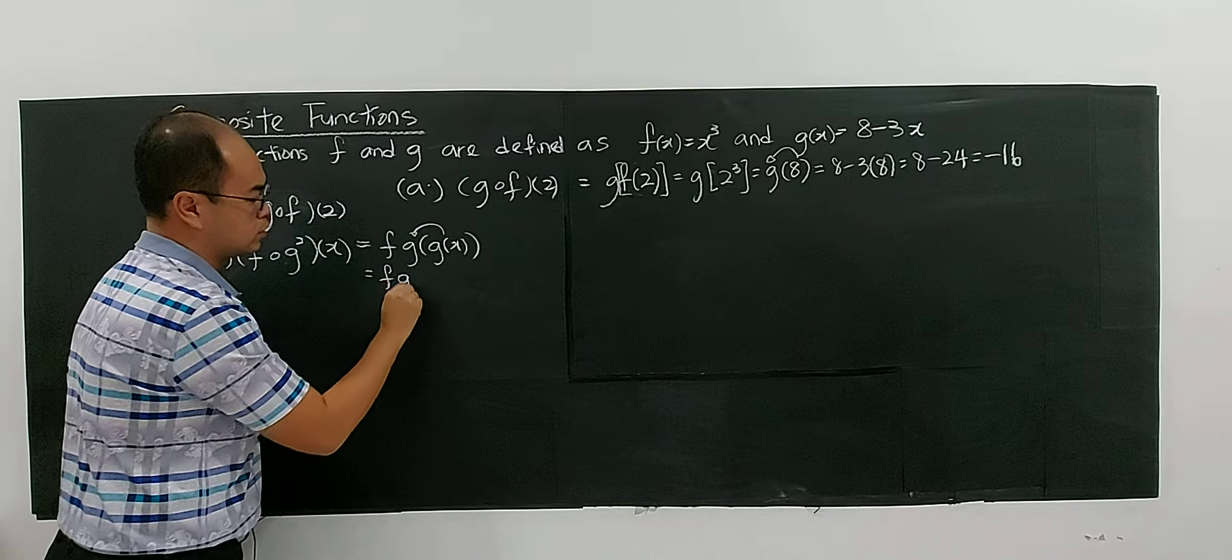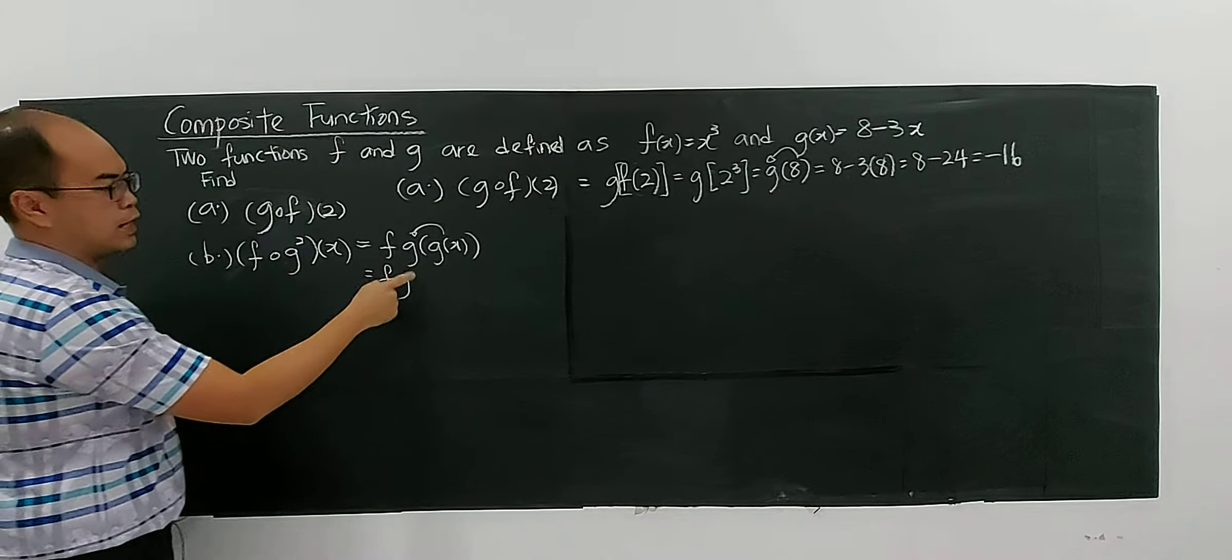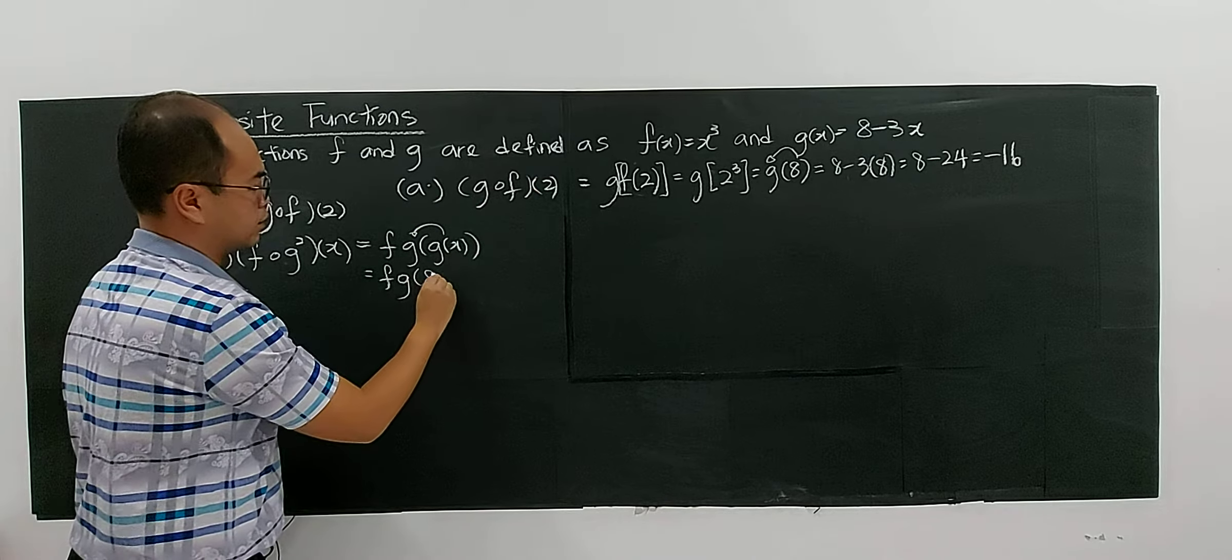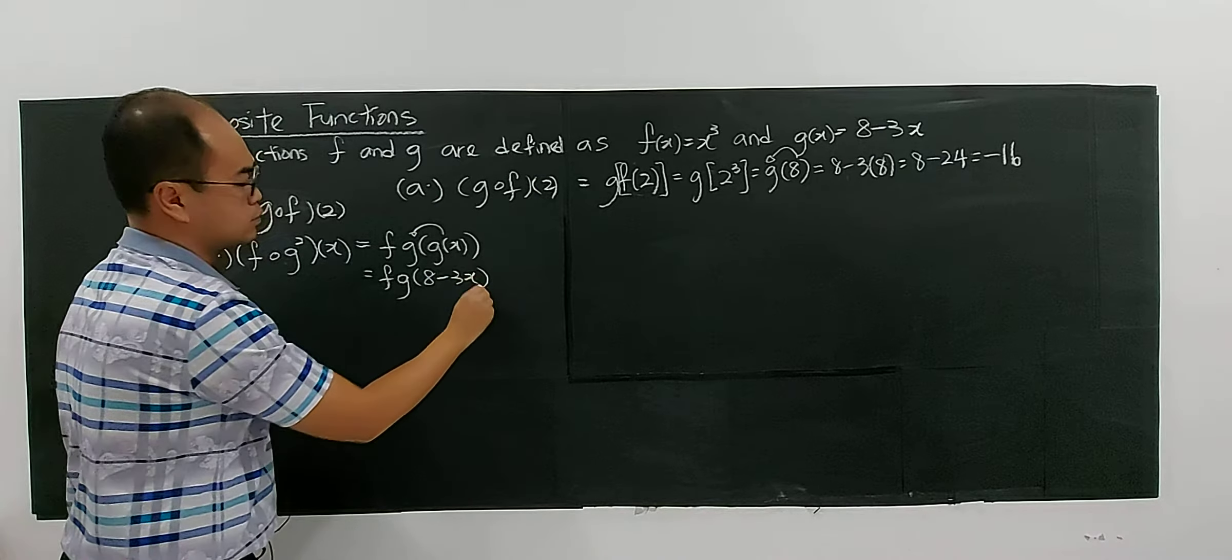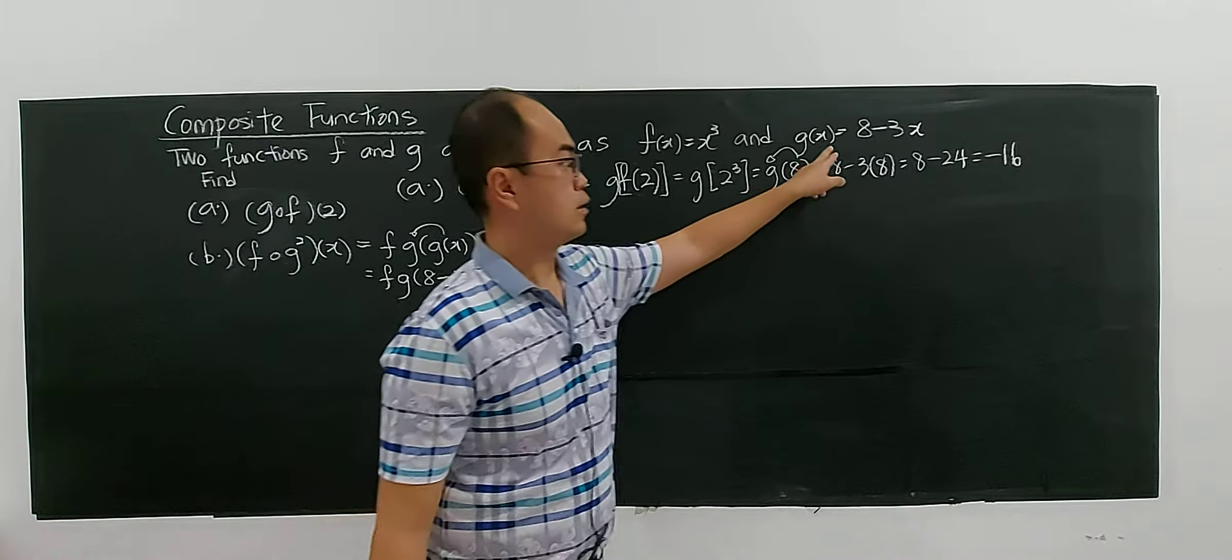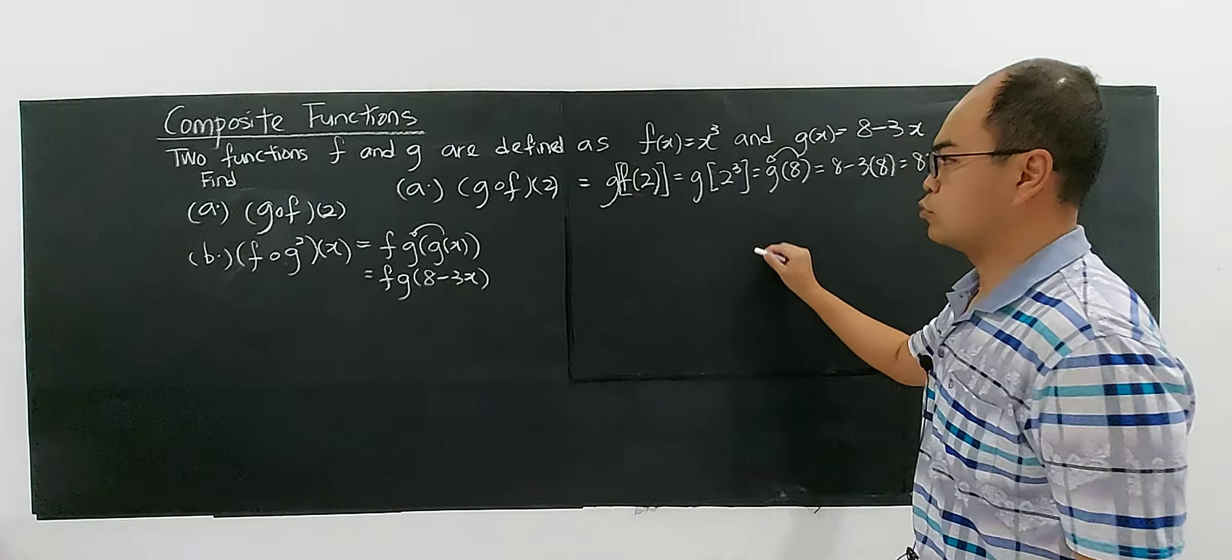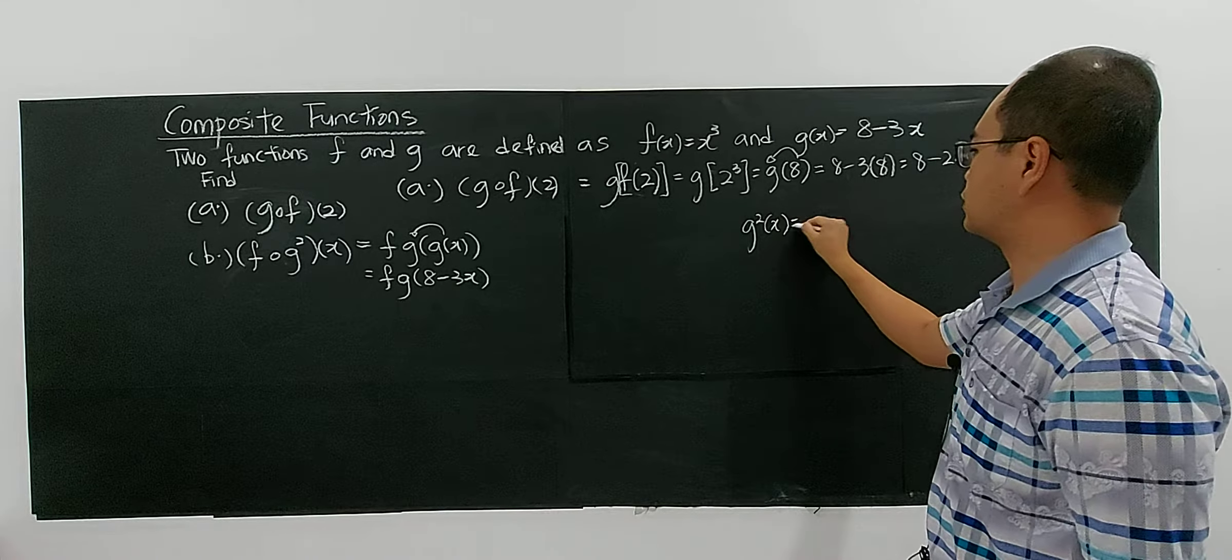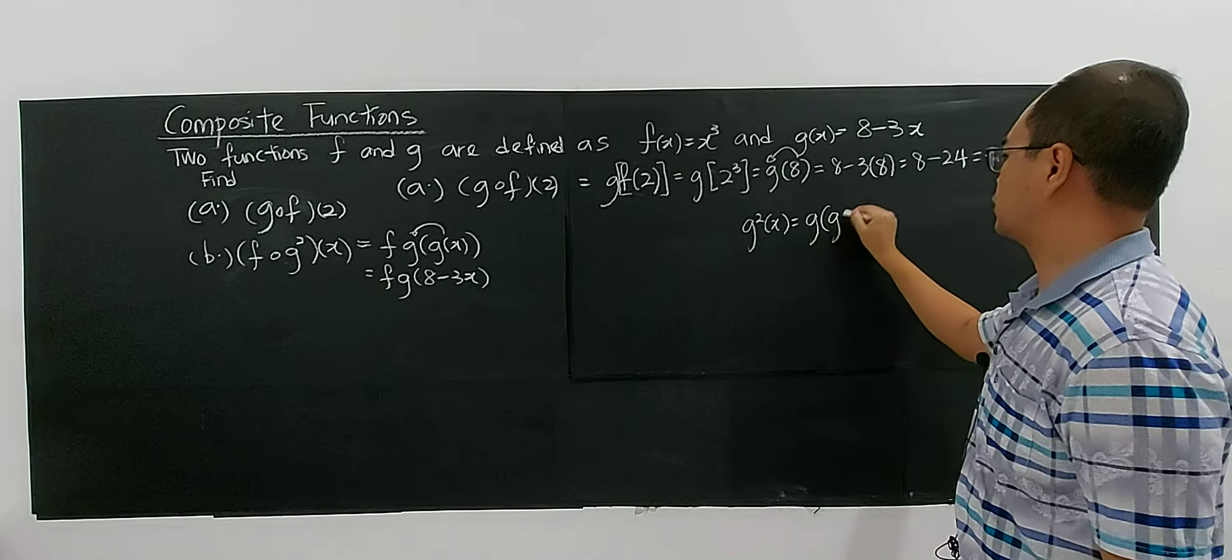So what is your g? g(x) = 8 - 3x. I'm going to do it separately if you want. So g²(x) is g(g(x)).